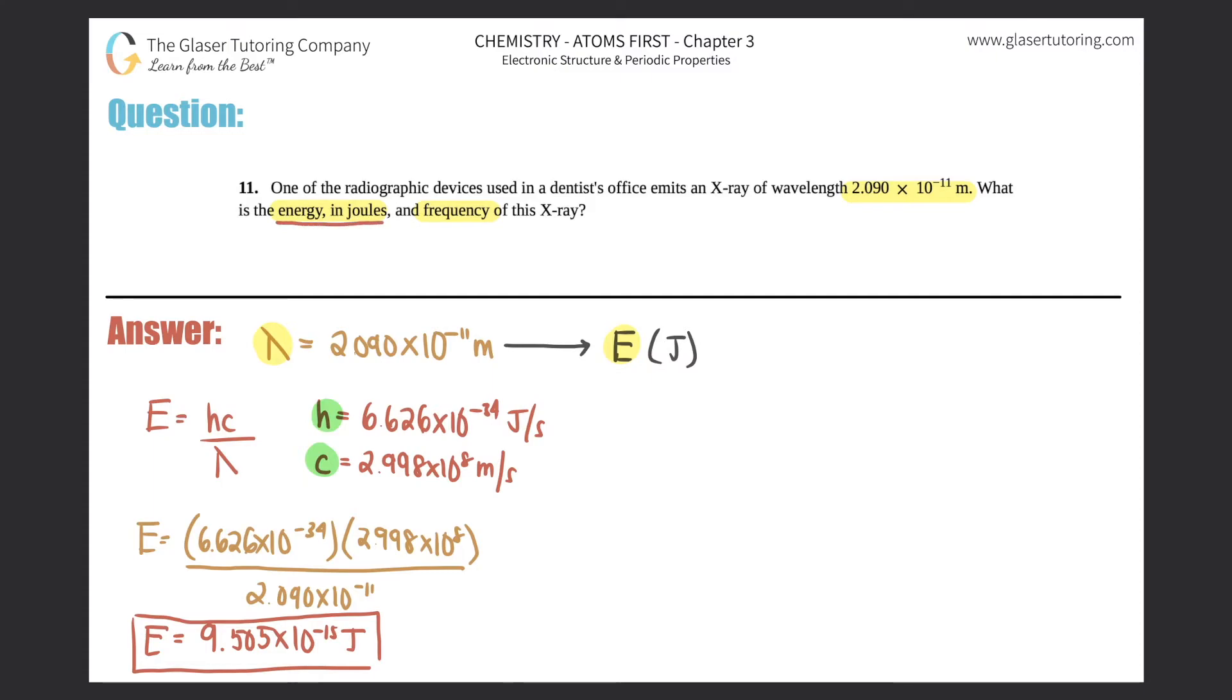Now we just have to convert to a frequency. We should also know a conversion between wavelength and frequency: the speed of light formula, c equals wavelength times frequency. In this case, frequency in the textbook is actually a nu, it's like a slanted v, so I'm just going to say that we're searching for nu, which is frequency.